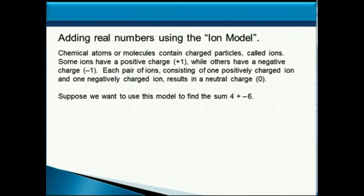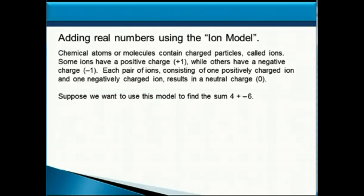Now let's look at another way you can think of adding real numbers using what we call an ion model. Chemical atoms or molecules contain charged particles called ions. Some ions have a positive charge, while others have a negative charge. Each pair of ions consisting of one positively charged ion and one negatively charged ion results in a neutral charge, which we call 0.